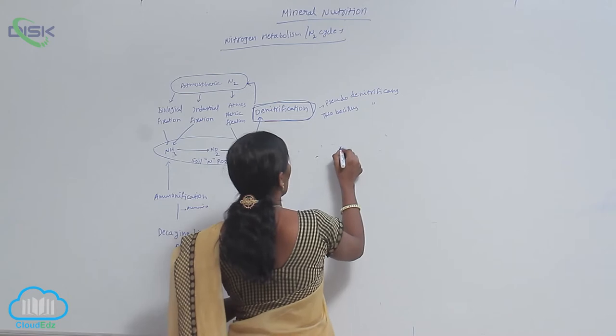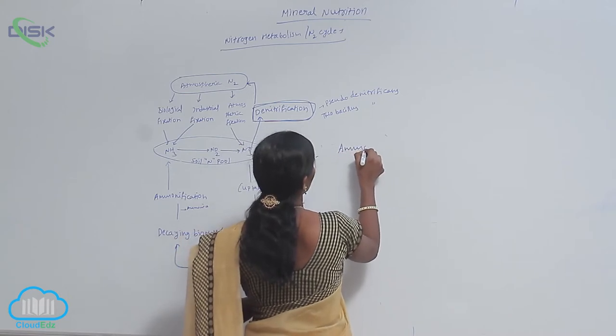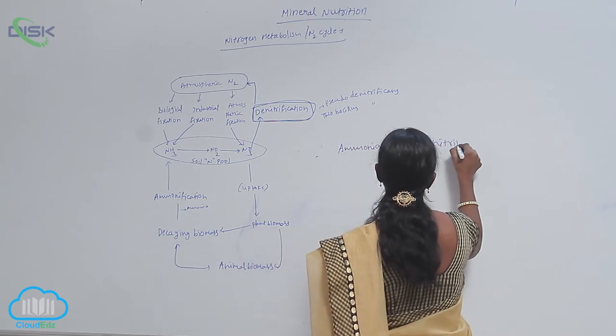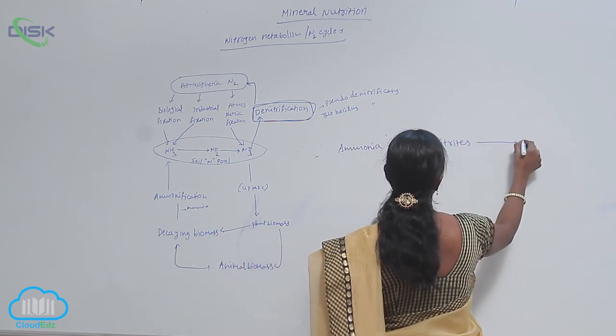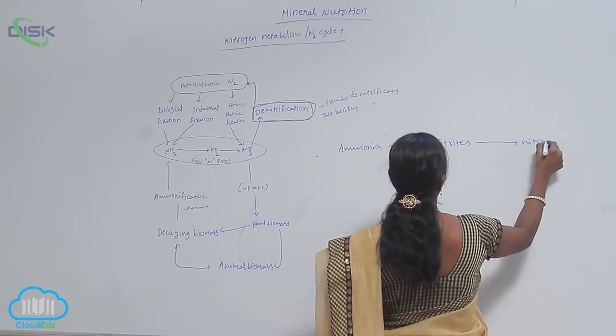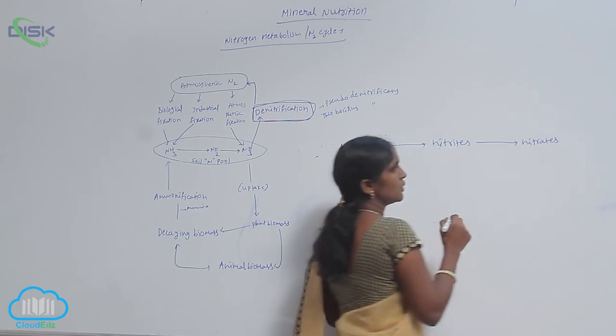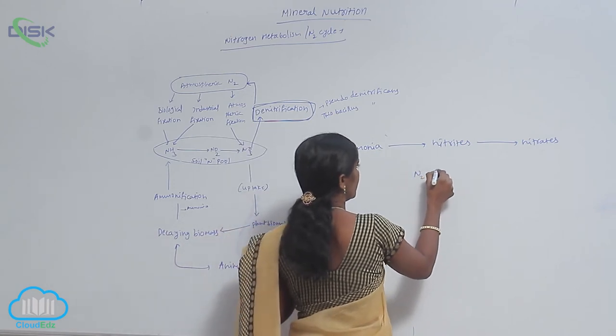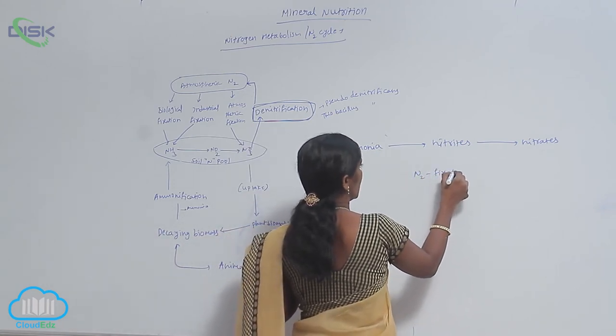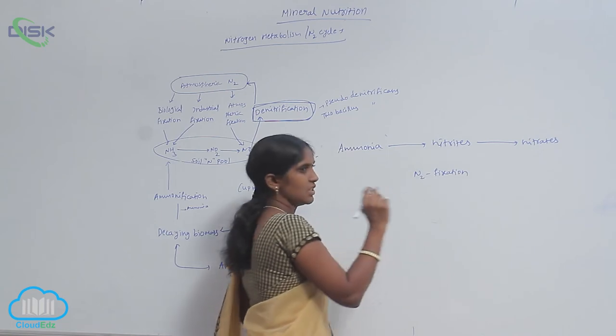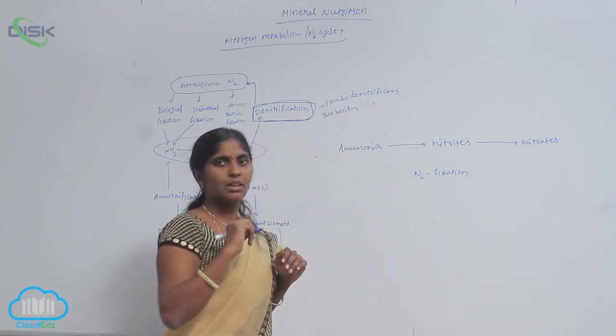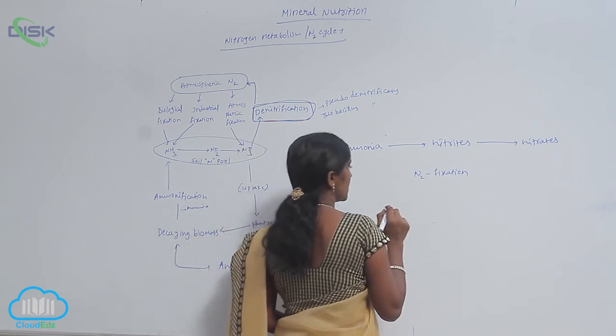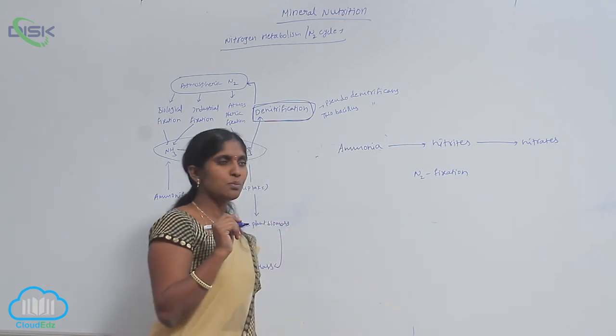This means ammonia to nitrites, and nitrites to nitrates. This complete process is called nitrogen fixation. These reactions are mediated by microorganisms called chemo-autotrophs.